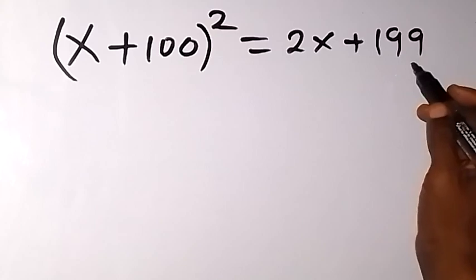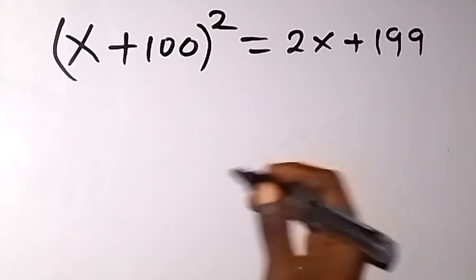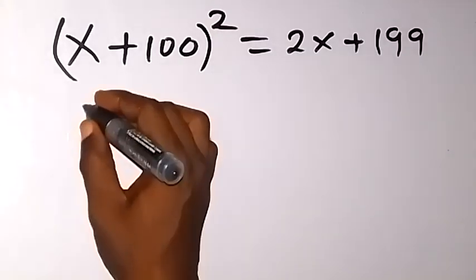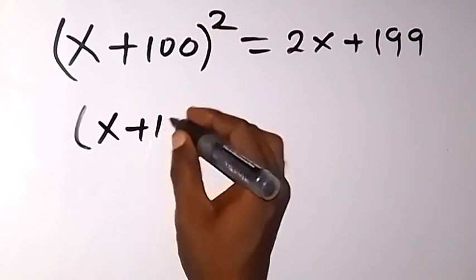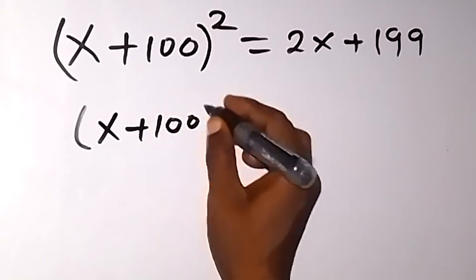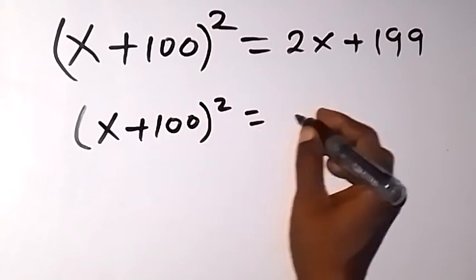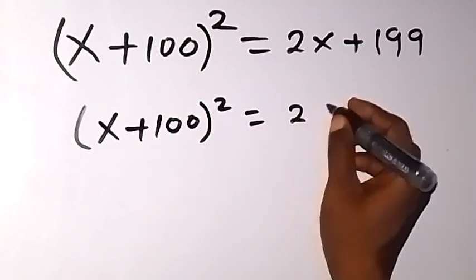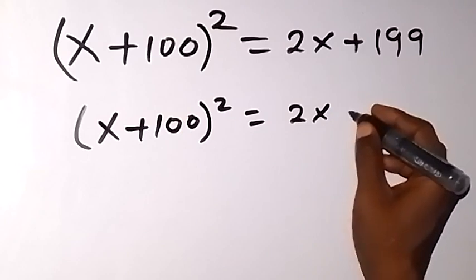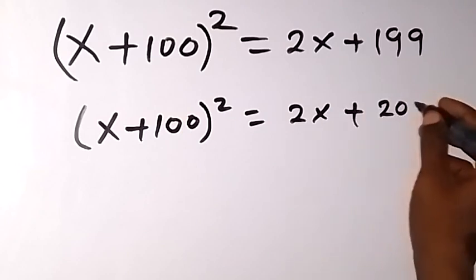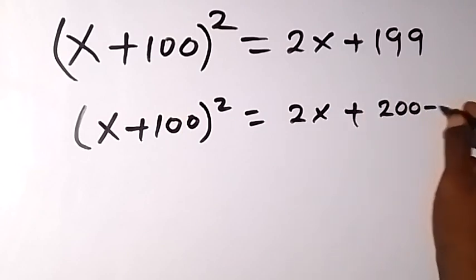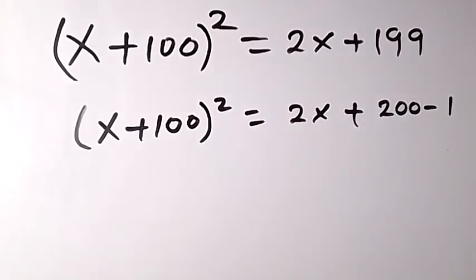We write 199 as 200 minus 1, and we have (x + 100)² equals 2x + 200 minus 1.